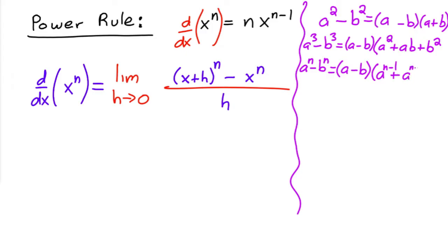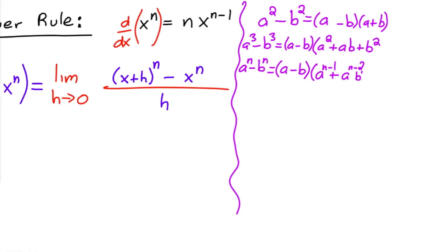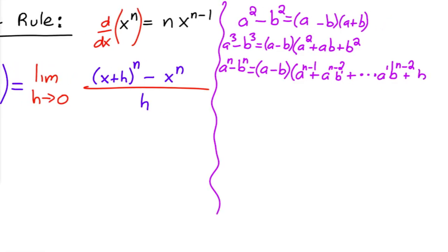a to the n minus two b to the one. And so what ends up happening is basically the first one, the degree goes down every time until you get to a to the one b to the n minus two, and then plus b to the n minus one. So notice how the degree of the first one goes down and the degree of the second guy goes up each time.